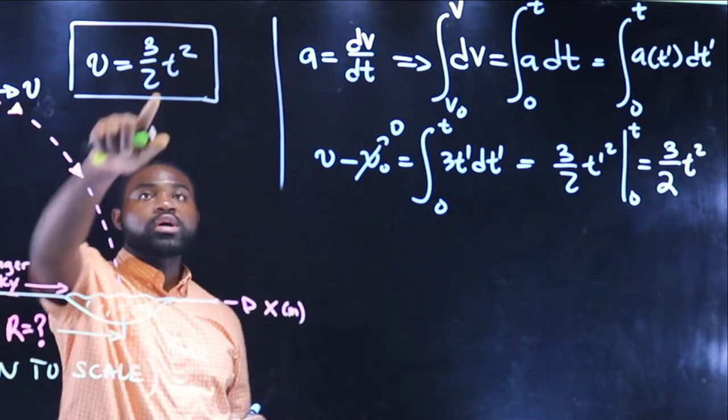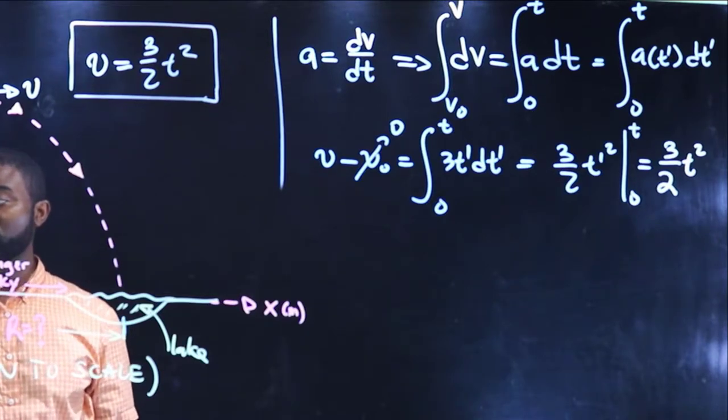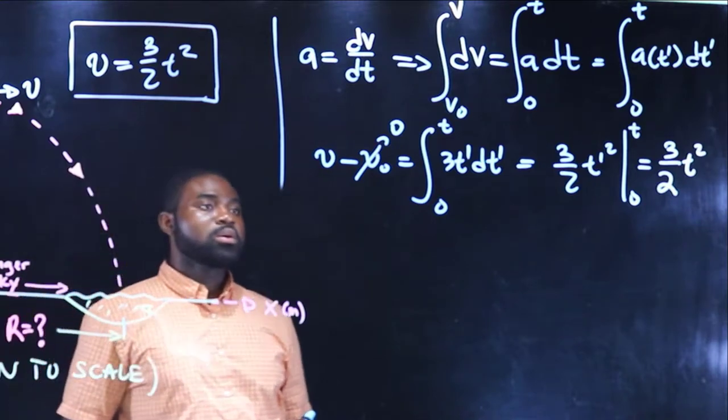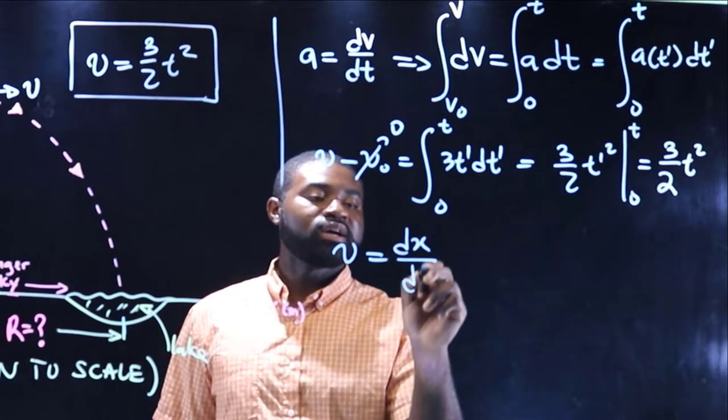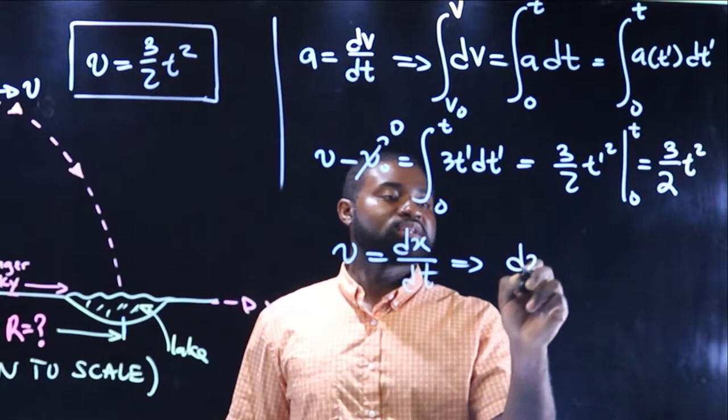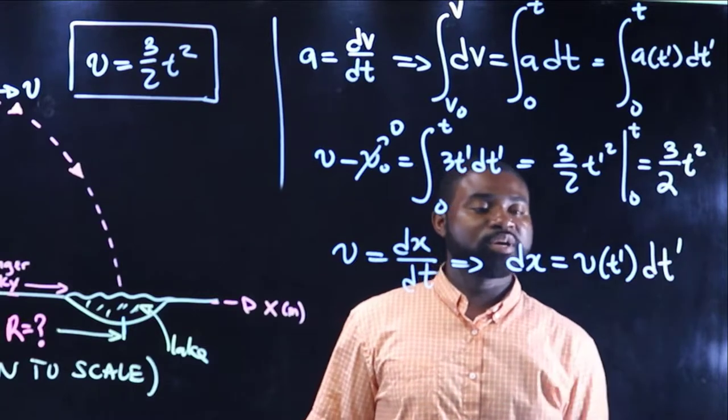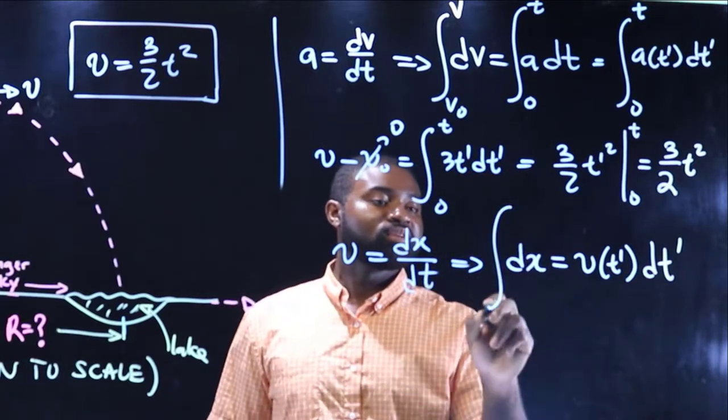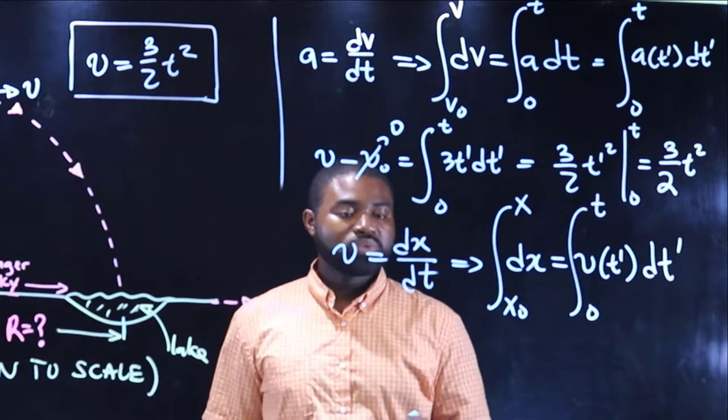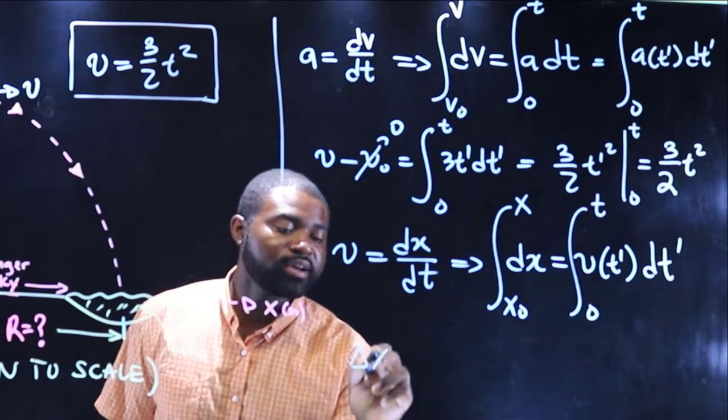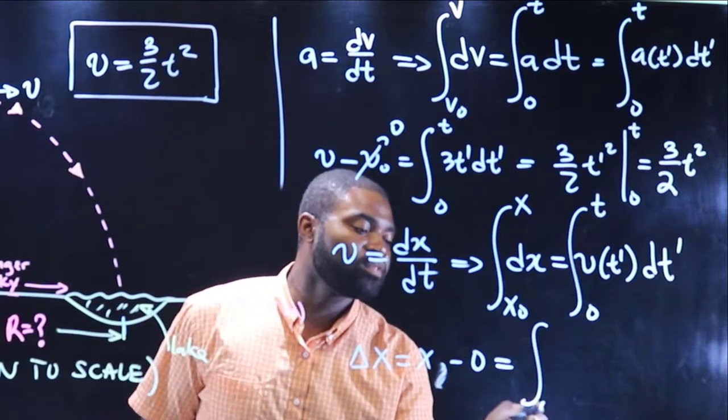But the question is, what is t? We know this distance from here to here is 4.5. We're assuming that our origin is right here. So similarly, v is equal to dx all divided by dt, which implies that dx is equal to v(t prime) dt prime. So if we integrate from both sides, if we integrate from both sides from x-naught to x, integrate from 0 to t, what we are going to be left with is delta x, which is just x minus 0.